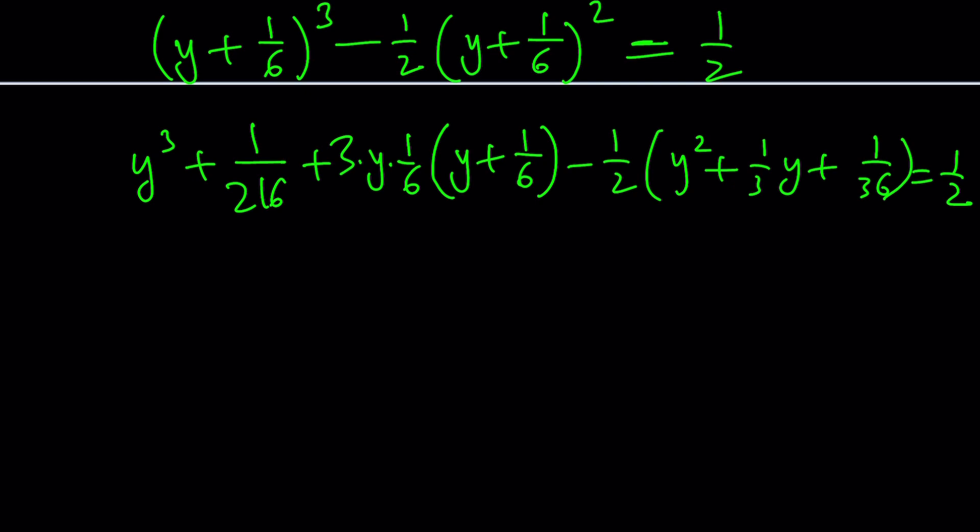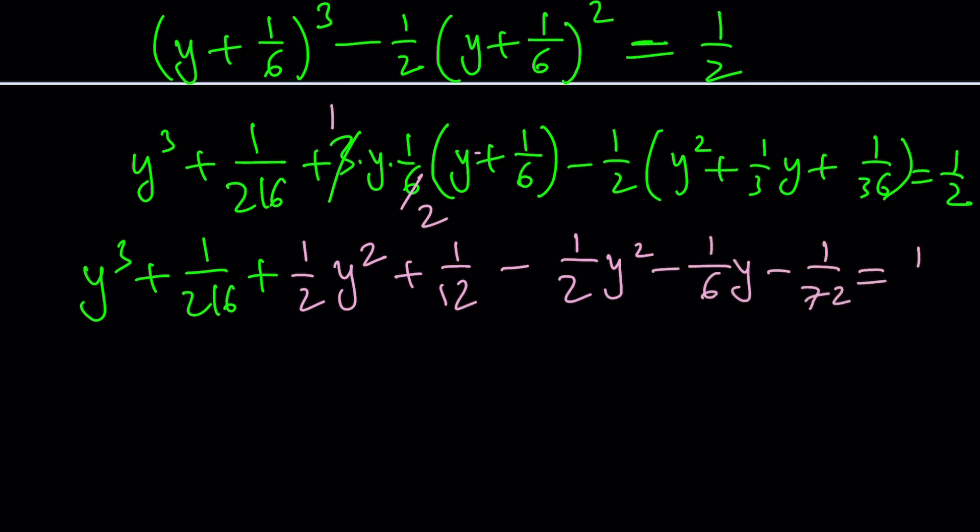Now let's try to simplify this a little bit. This should give me y cubed plus 1 over 216, plus some terms cancel out. So we can divide the 3 into 6. So that gives us 1 half y squared. And then since we have 1 half, that will be 1 over 12 here. And then minus 1 half y squared minus 1 over 6y minus 1 over 72 equals 1 half, which you can subtract from both sides. But what is really significant here is that y squared cancels out. This one and that one.